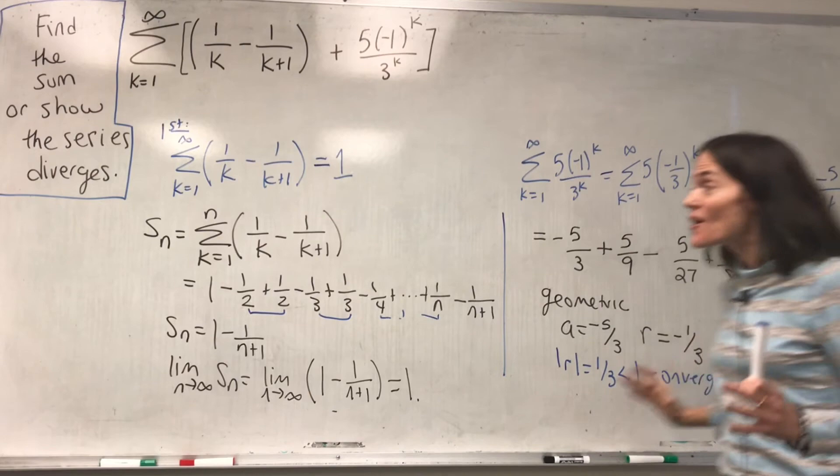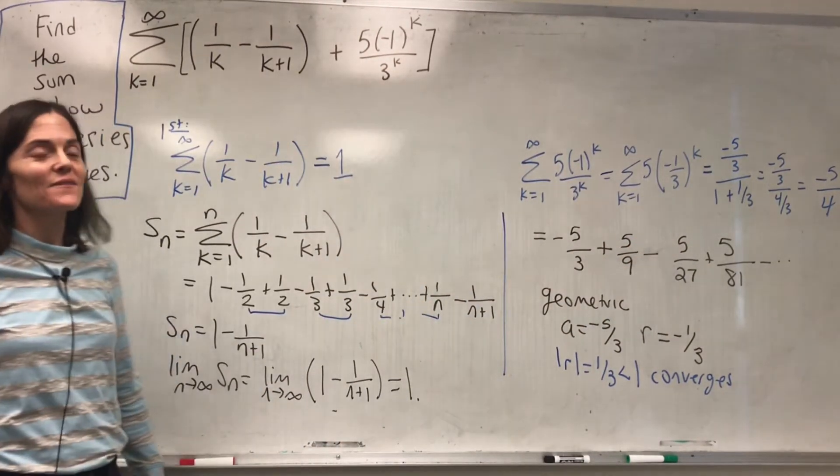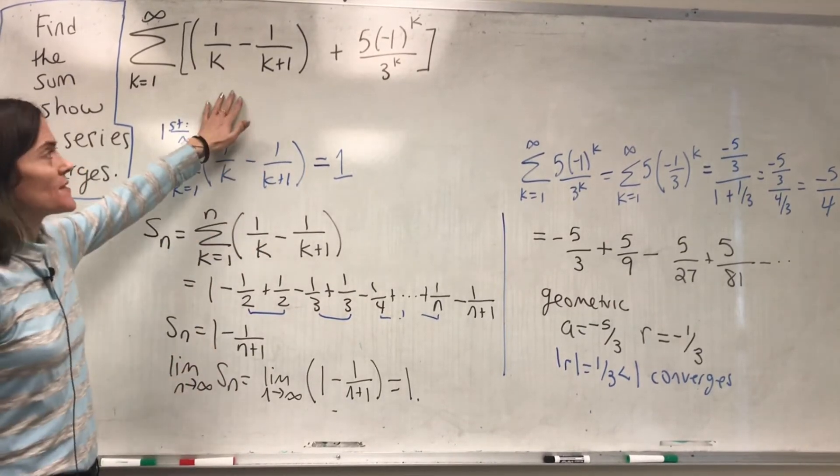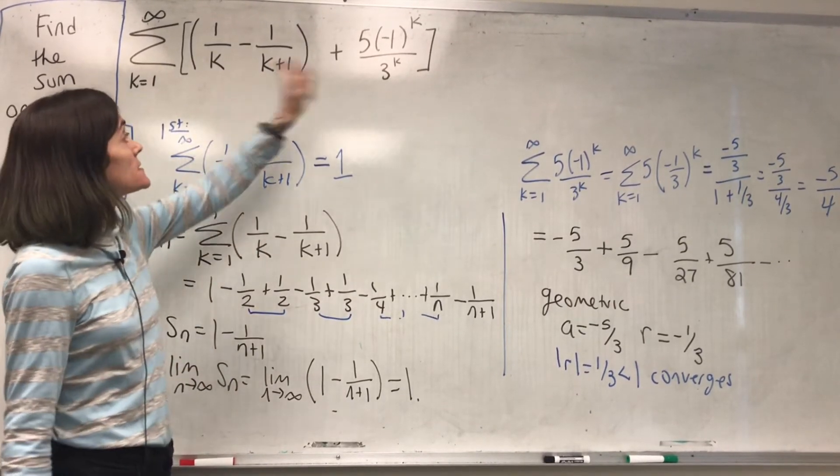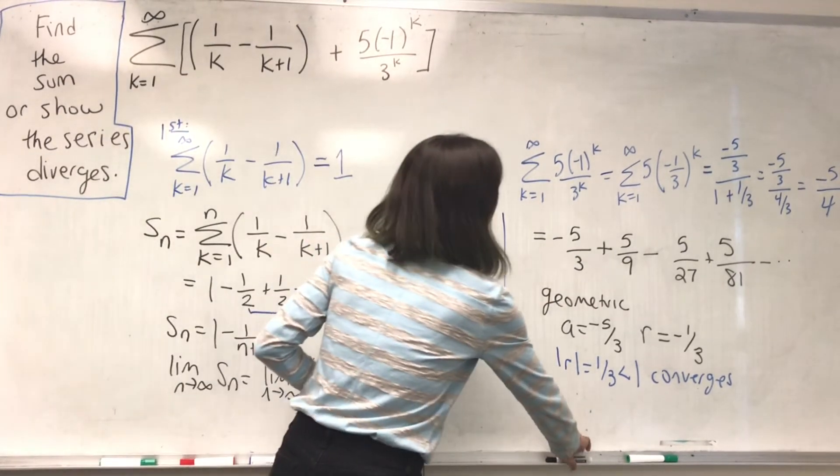So we have shown this series converges to negative 5 over 4. This series converges to 1. And this series, the one that we started with is term by term, the sum. Therefore, we have the answer.